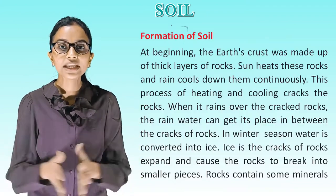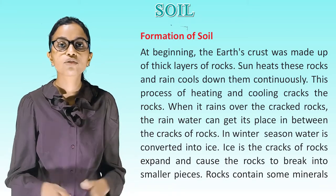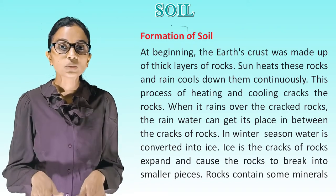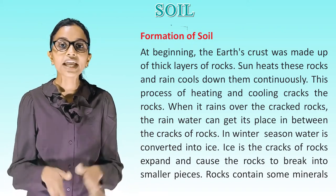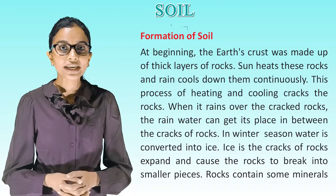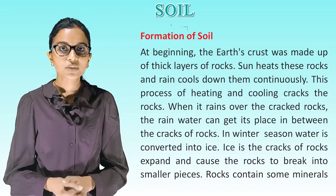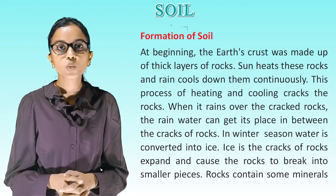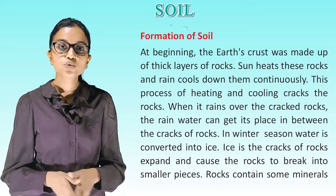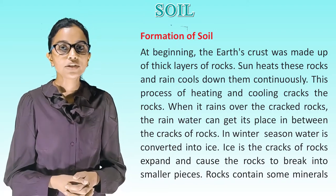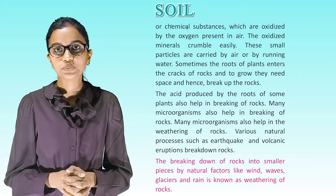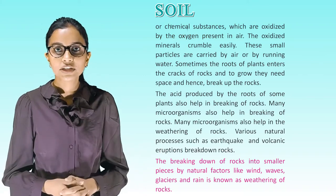Formation of soil: At the beginning, the earth's crust was made up of a thick layer of rocks. The sun heats these rocks and rain cools them down continuously. This process of heating and cooling cracks the rocks. When it rains over the cracked rocks, rain water gets into the cracks. In winter, water is converted into ice, which expands the cracks and causes rocks to break into smaller pieces. Rocks contain minerals which are oxidized by the oxygen present in air, and the oxidized mineral crumbles easily.